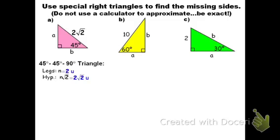The last thing I need to do is identify the missing sides. A is a leg, B is a leg, and from the problem the legs are both 2. So A is 2 units and B is 2 units. It's an isosceles right triangle where both legs are 2 units.